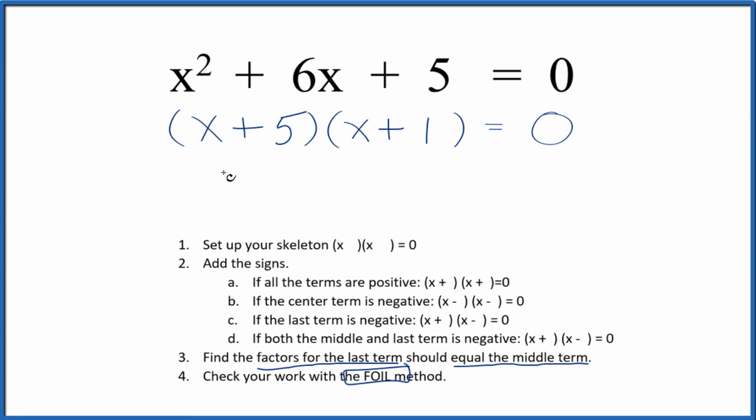So we multiply the first terms. x times x is x squared. The outside, x times 1, that's 1x. The inside, 5 times x is 5x. And the last, 5 times 1, that gives us 5.